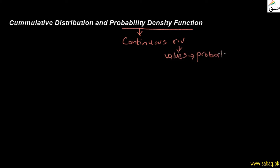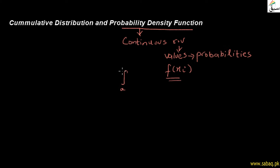We have a function that we represent as f of x. This is the Probability Density Function. When we integrate it over the limit, we get what we call the probability density function.